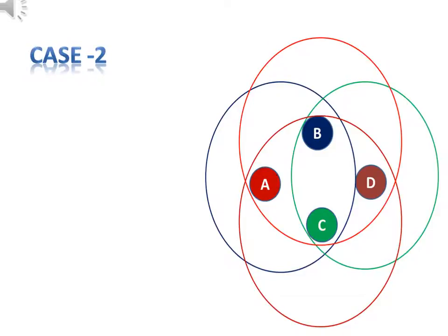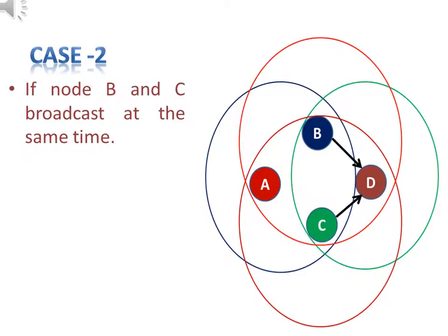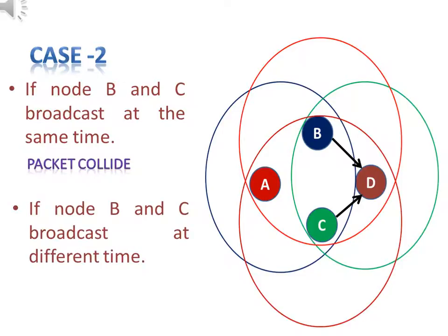Let's see the second case. In the second case, if nodes B and C broadcast at approximately the same time, there is a possibility of packet collision at node D. Even if nodes B and C broadcast the message at different times, node D will receive a total of two broadcast messages, one each from nodes B and C.